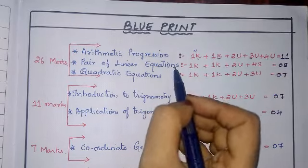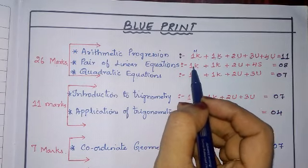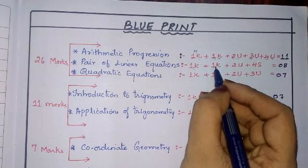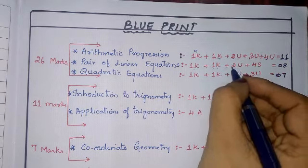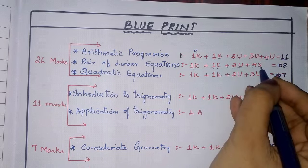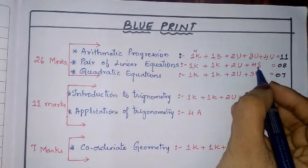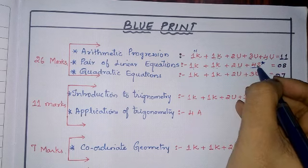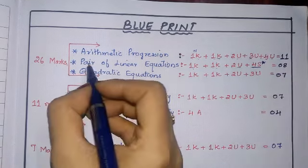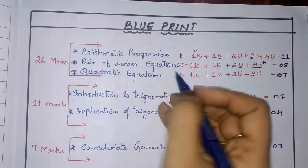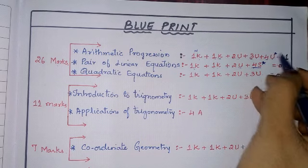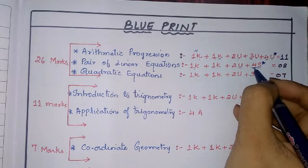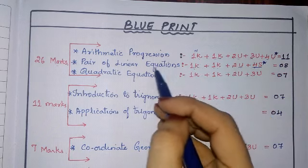For Pair of Linear Equations: 1 MCQ (knowledge), 1 one-mark question (knowledge), 1 two-mark question (understanding), and 1 four-mark skill question — which is the graph. The graph comes under skill and is marked with a star, meaning it is a compulsory question. Total 8 marks from Pair of Linear Equations.